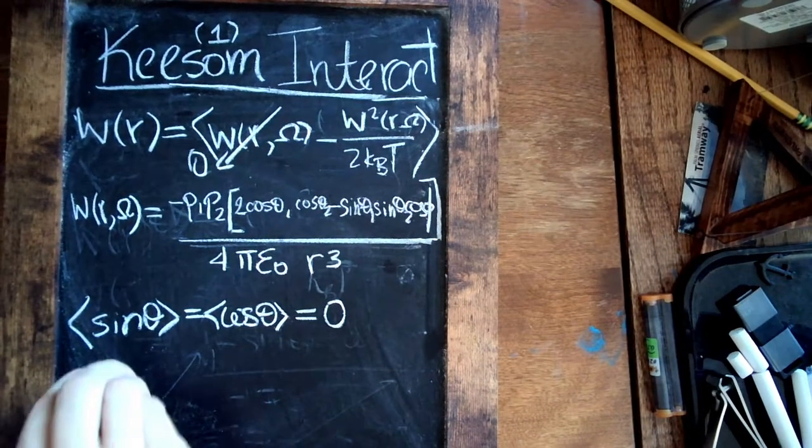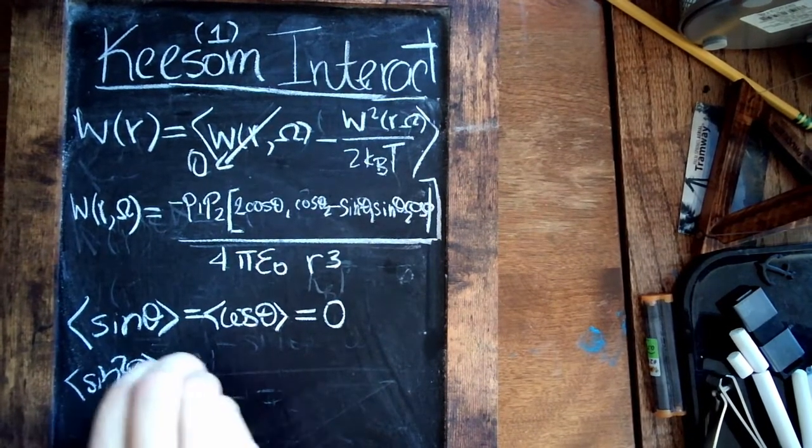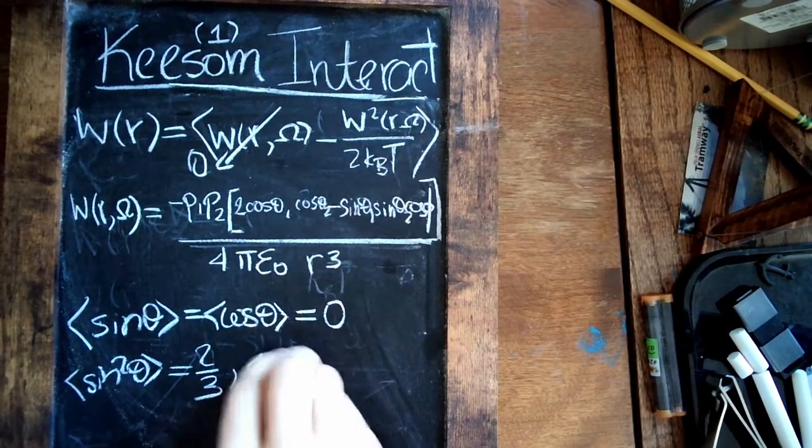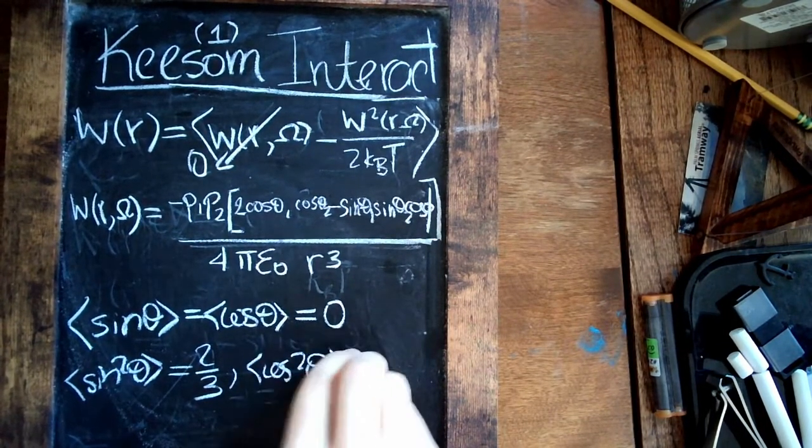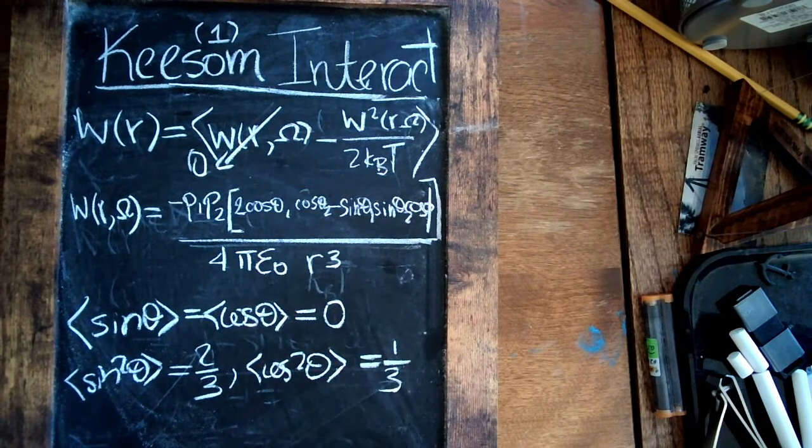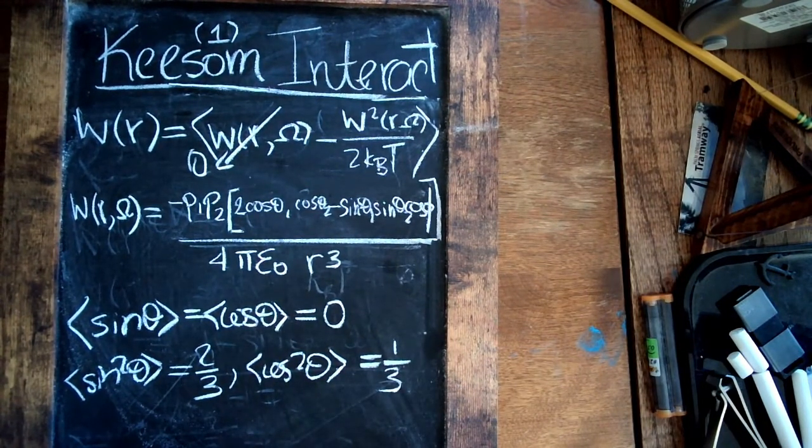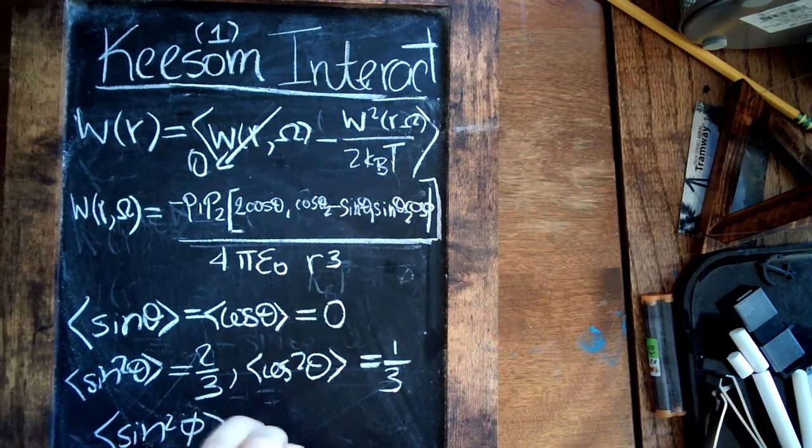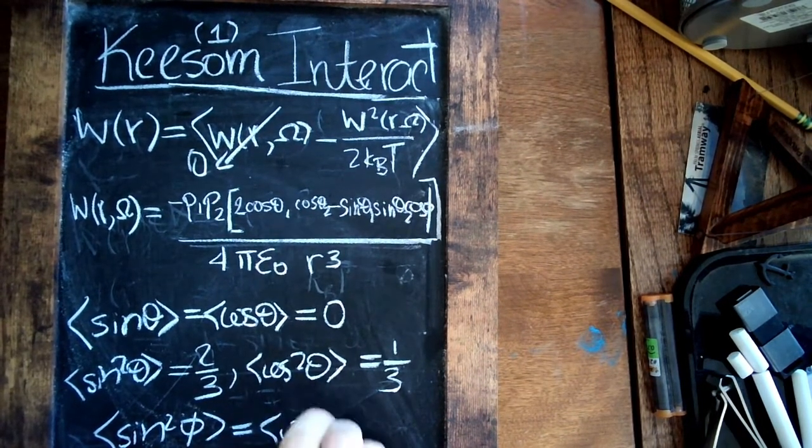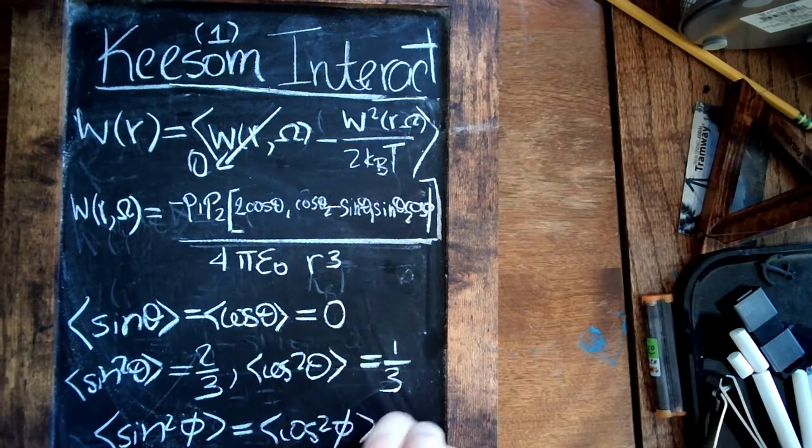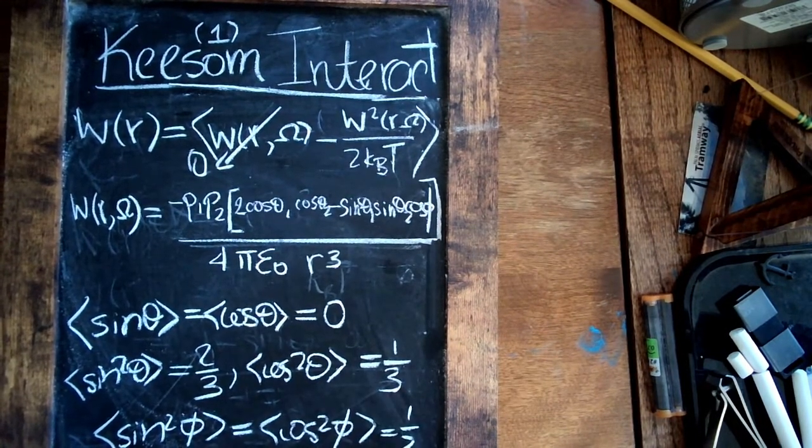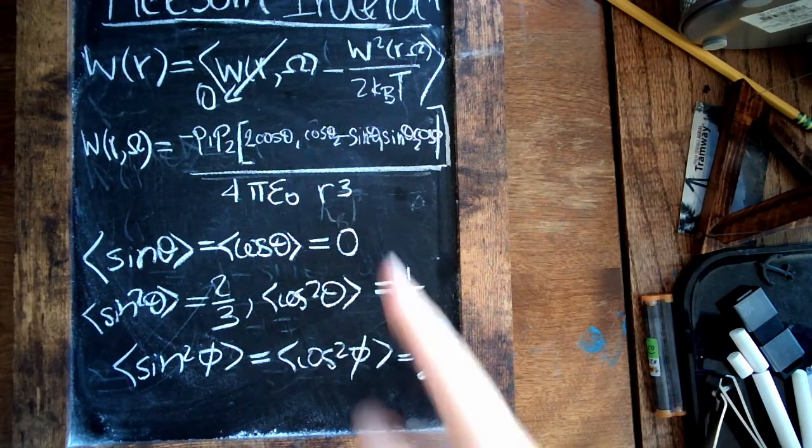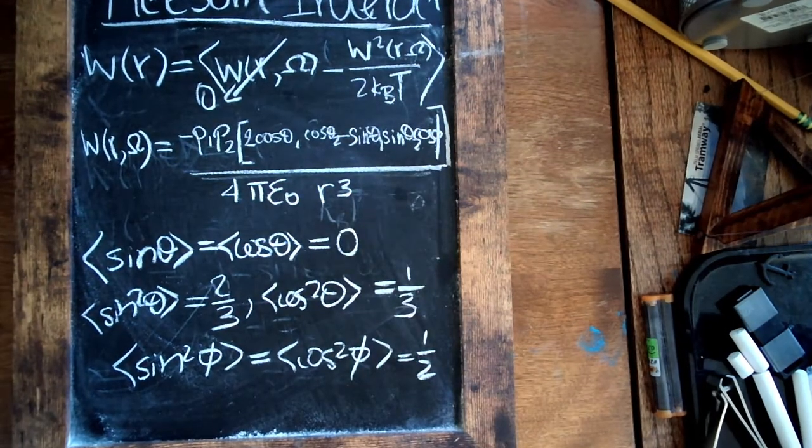Now sine squared of theta average is equal to 2/3. Cosine squared theta averaged is equal to 1/3. And if we want to look at phi, which is again a different angle, it's actually equal between cosine and sine—in both cases to one-half. So if we plug in these numbers to this thing squared, we can get our final average.